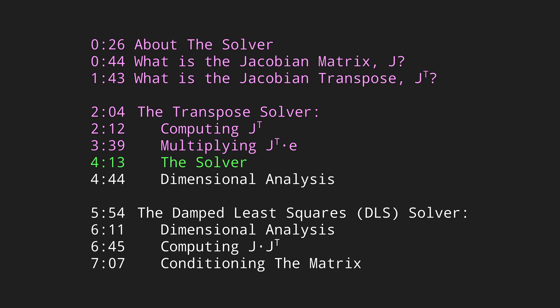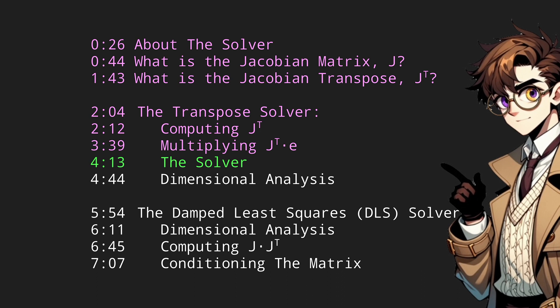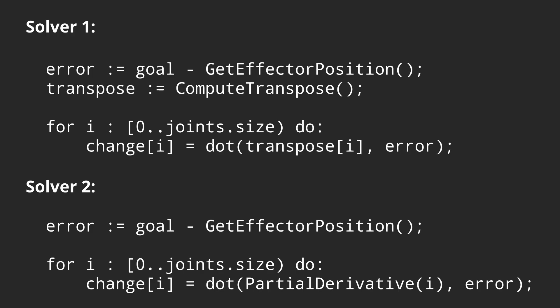And that brings us to the most basic Jacobian solver. We've gone over computing the transpose and multiplying a vector by the transpose. Now that we have those building blocks, the simple solver is just three parts. We get the changes in each angle by getting the dot product of the transpose matrix by the error vector. That is the difference between the grabber position and the goal. Again, we don't actually need to compute the transpose matrix to do this method.